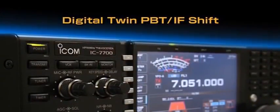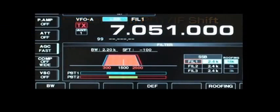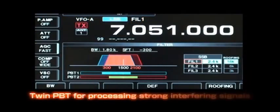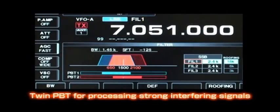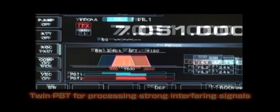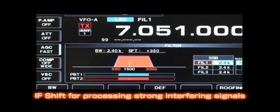As mentioned earlier, the digital twin pass band tuning function is useful for narrowing the IF pass band and escaping unwanted interference. Another weapon against interference is the IF shift function that allows you to shift or move the IF pass band so you can keep on the intended signal.